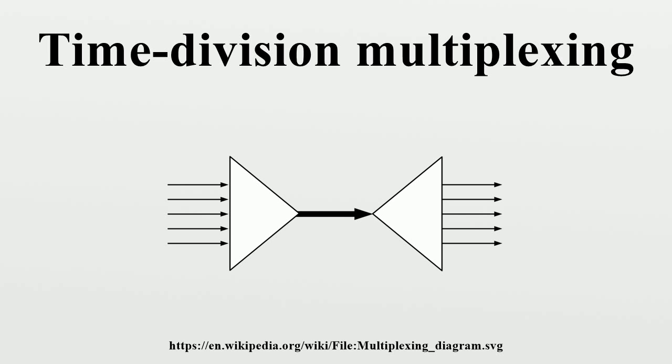For example, a European 120-channel TDM frame is formed by multiplexing four standard 30-channel TDM frames. At each higher-order multiplex, four TDM frames from the immediate lower order are combined.